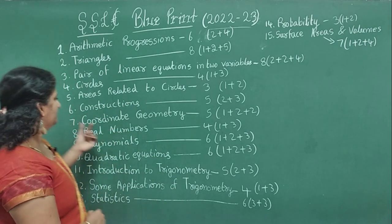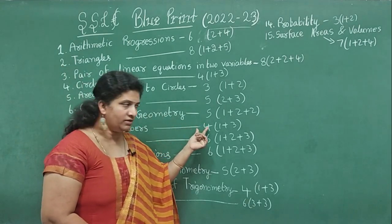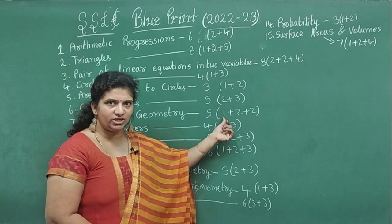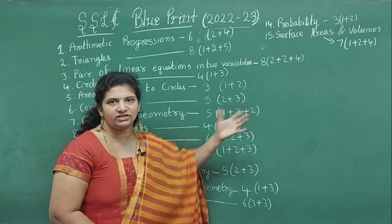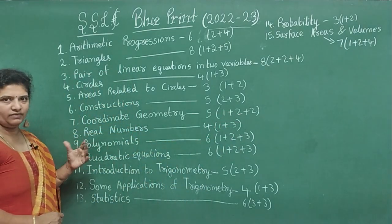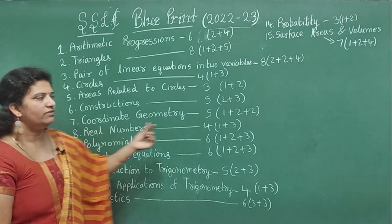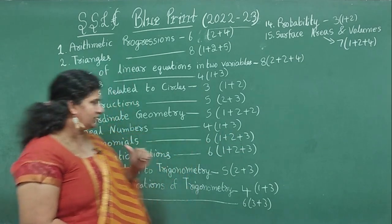Seventh, Coordinate Geometry - we can expect 5 marks. One mark question, either distance formula or section formula. Formula-oriented, 2 marks, two questions will be asked. Eighth chapter, Real Numbers - we can expect 4 marks: one mark question and 3 mark question.